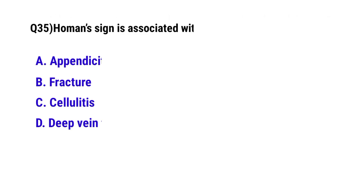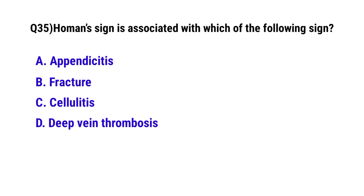Question No. 35. Homans' sign is associated with which of the following? The correct option is D: DVT (deep vein thrombosis).